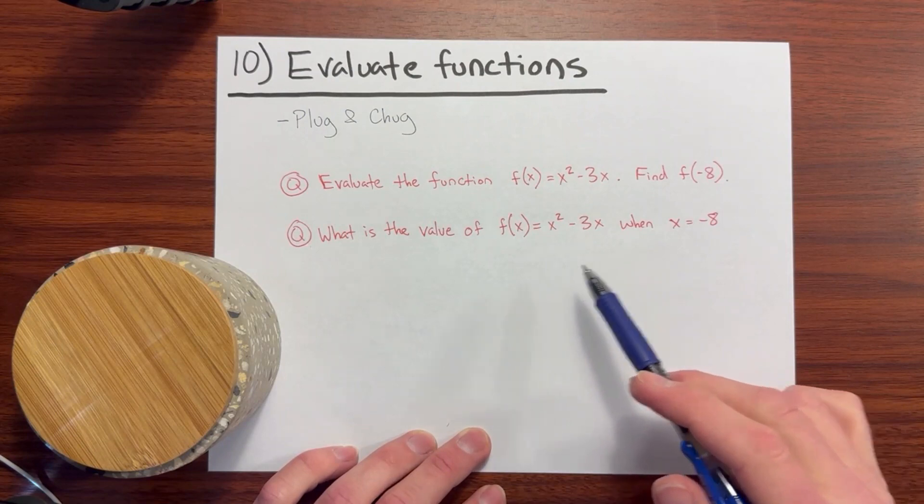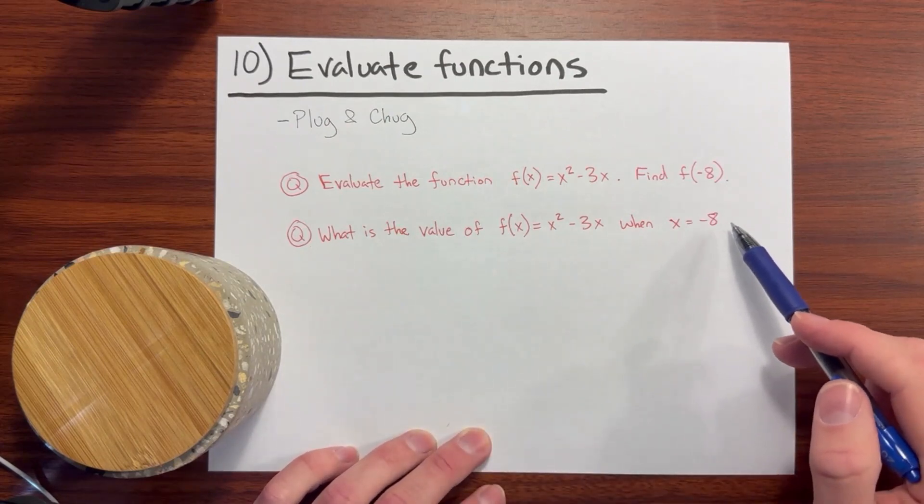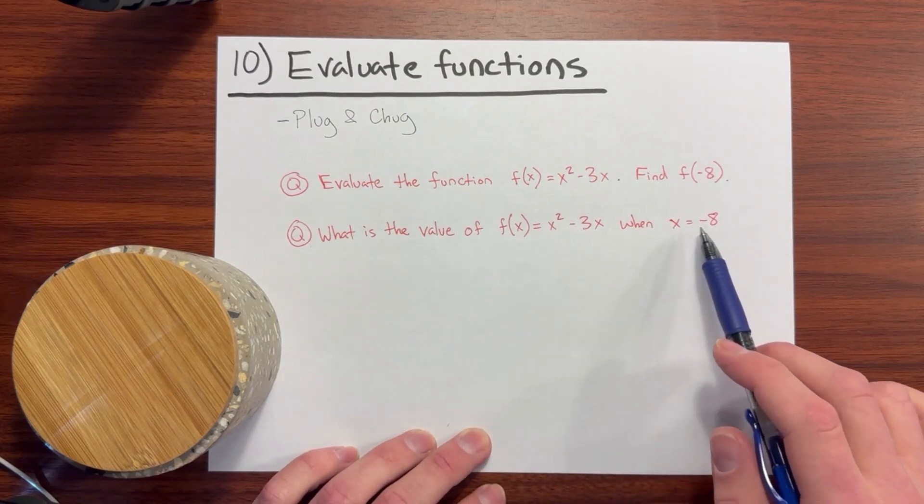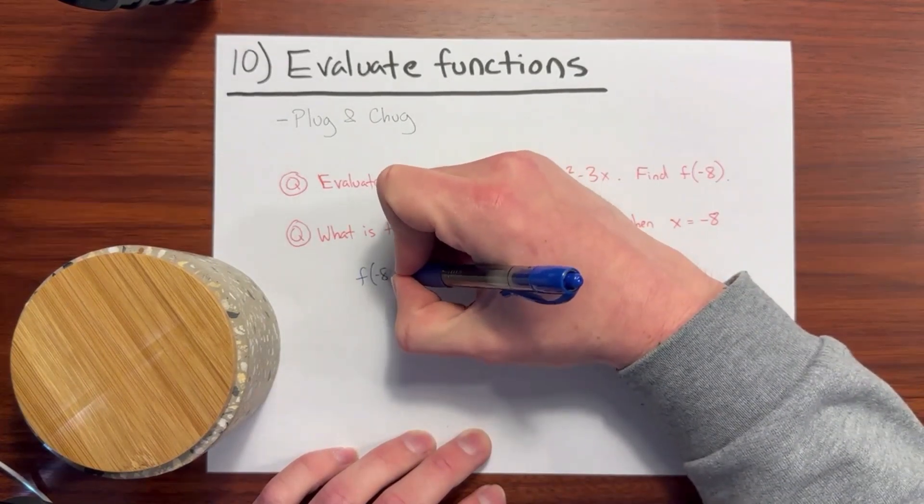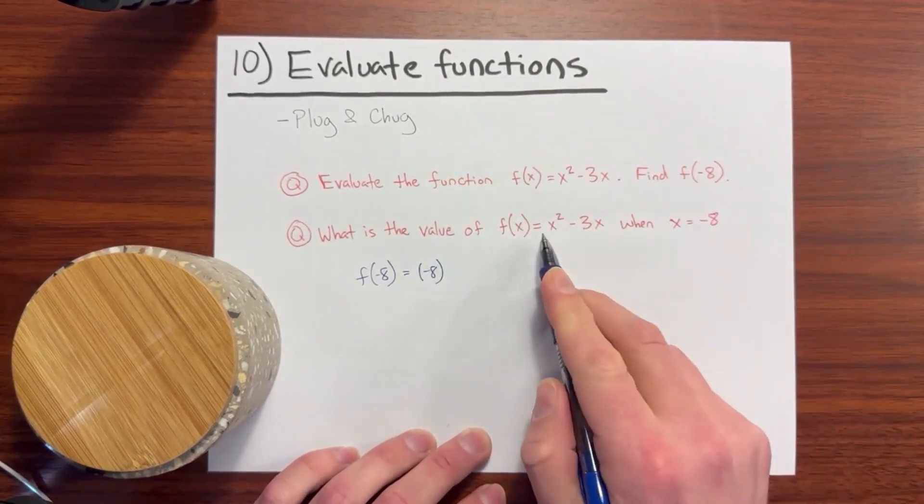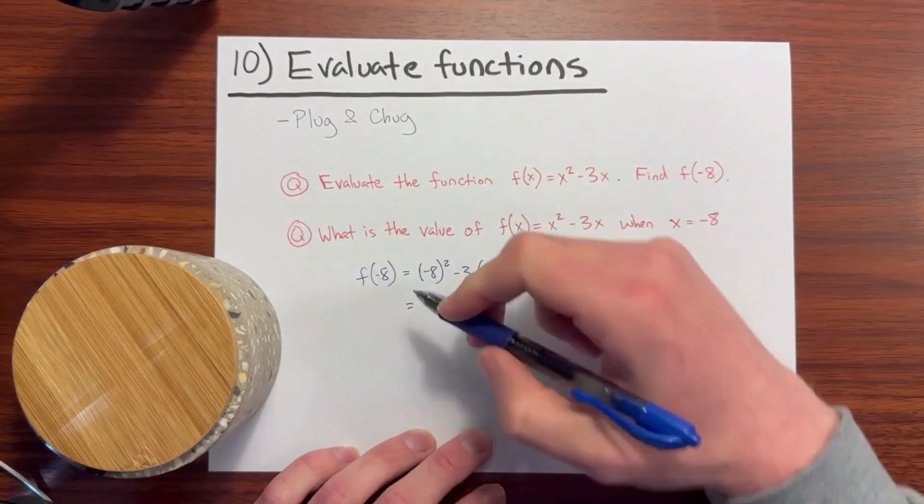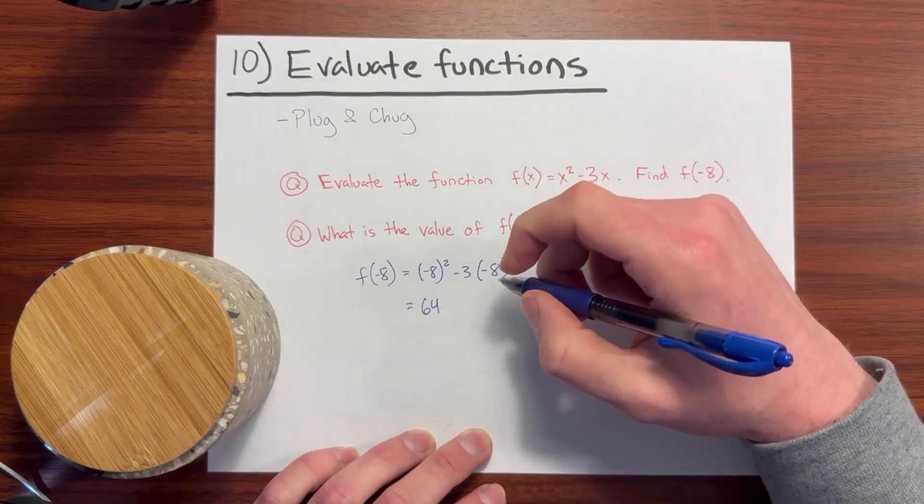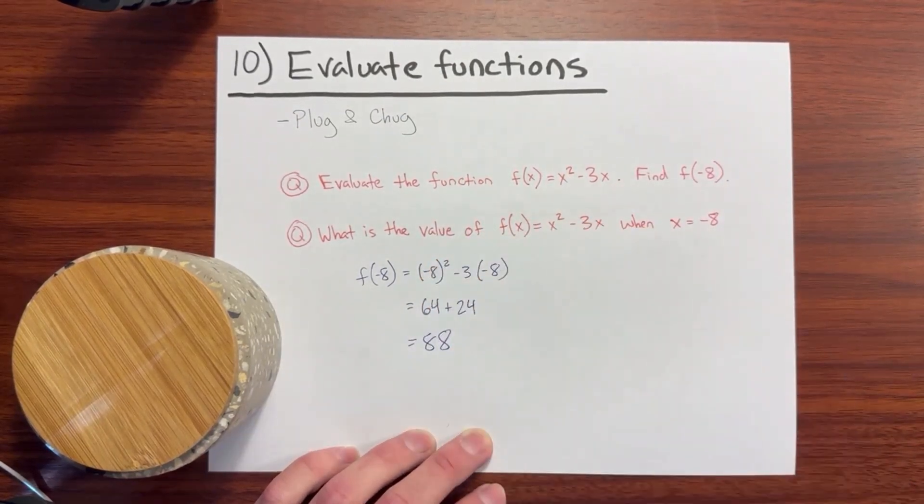Number 10: Evaluate functions. These are simply plug and chug problems. I've written the same question two slightly different ways. Let's go ahead and solve it. It asks, what is the value of the function x squared minus 3x when x equals negative 8? So we'll write in f, the function with an input of negative 8 equals negative 8 squared minus 3 times negative 8. Well, negative 8 squared is 64. 3 times negative 8 is negative 24. And we have a, that's subtracted, so it'll be plus 24. The answer is 88. Simple as that.